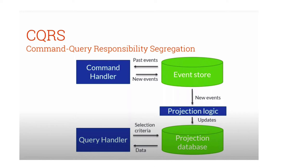In CQRS, you trigger a command to make updates. All those executions are stored in the event store. The event store raises an event which triggers the projection logic to update the projection database, and reads are done from the projection database. Looking at documentation you'll find CQRS implemented in different ways — the real objective is to segregate read and write. Implementing an event store to record all state-changing events gives you the ability to replay the whole system state.